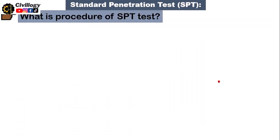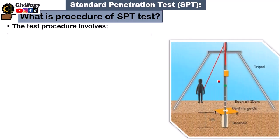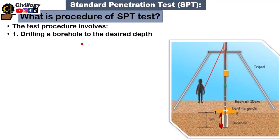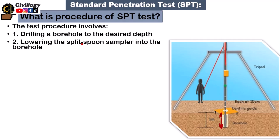The proper procedure of the SPT test first involves drilling a borehole to the desired depth — for example, 1 meter — at the location where a sample is required. The second step is lowering the split spoon sampler, connected to the drilling rod, into the borehole.